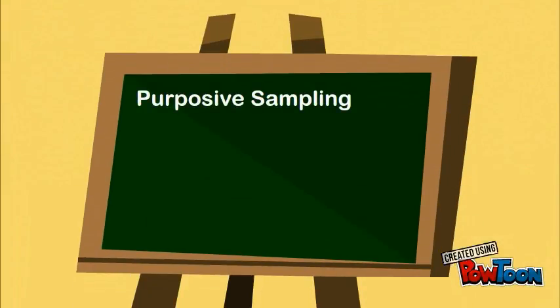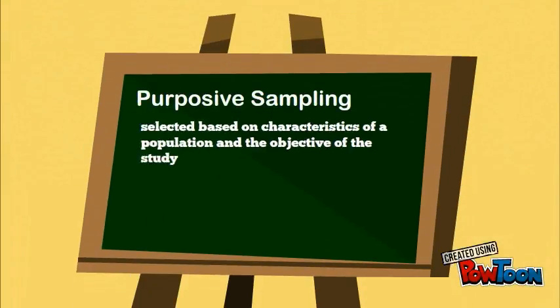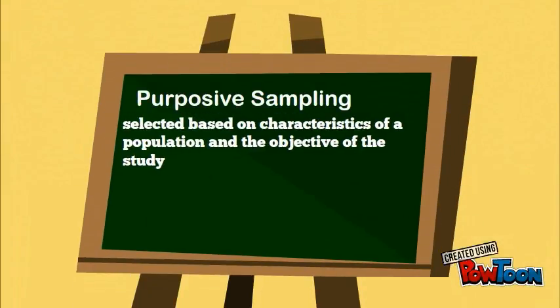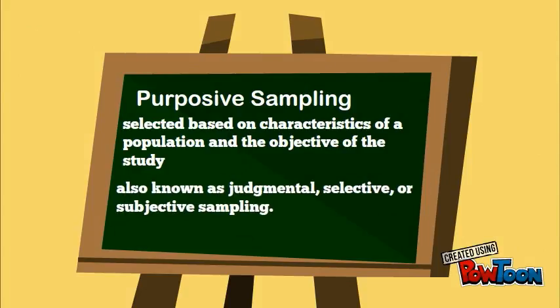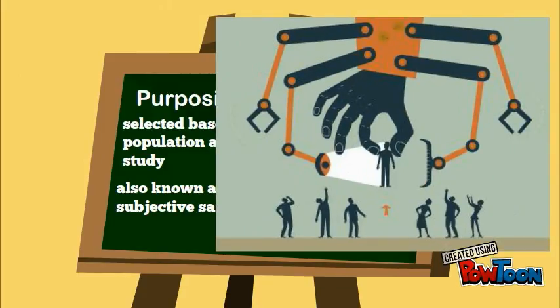Purposive sampling is selected based on characteristics of the population and the objective of the study. It is also known as judgmental, selective, or subjective sampling. This illustrates purposive sampling where only the person who suits the characteristics the researcher is looking for is selected.